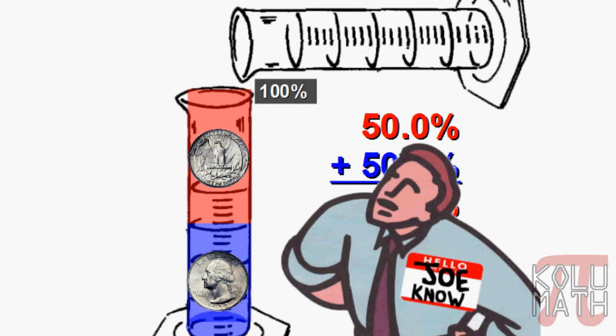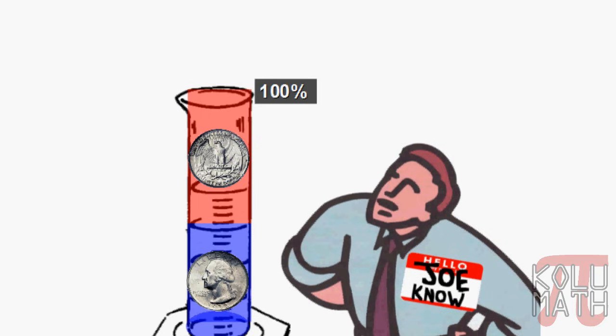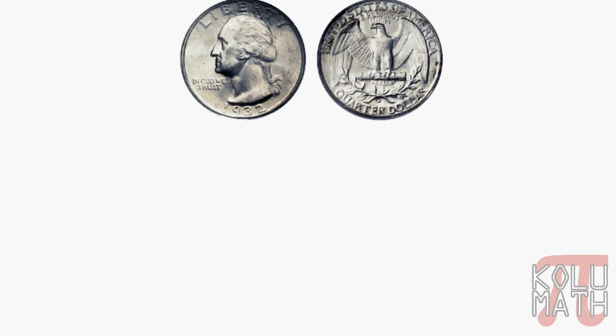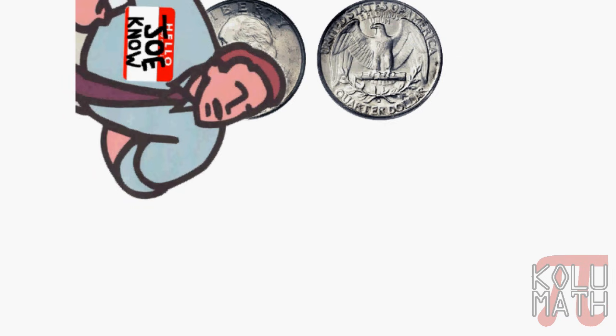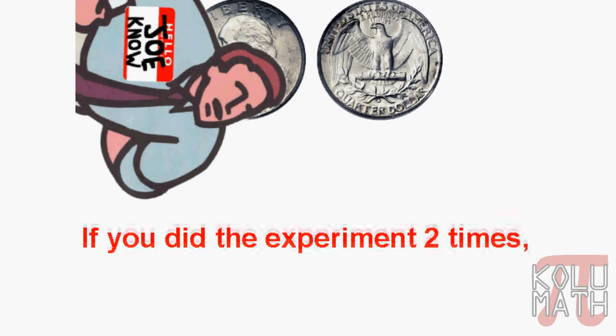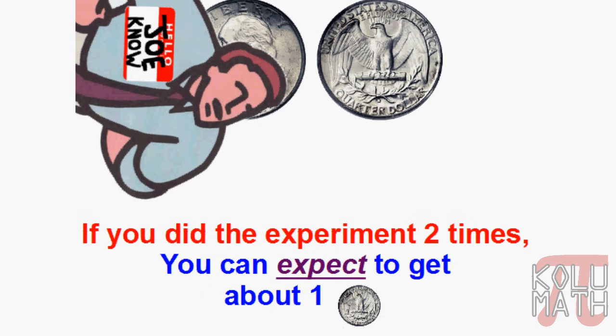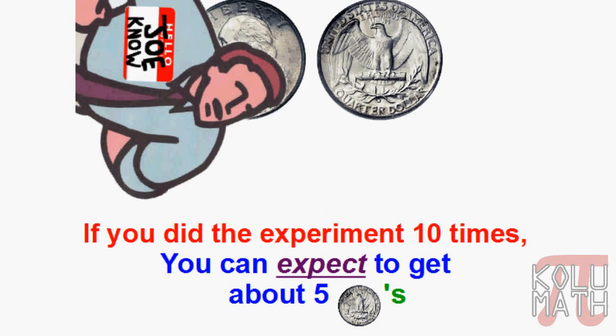Joe asks: are we talking about a probability of one half? Yes — good conversion. And can we apply the same logic we used before? If we did the experiment two times, we can expect to get about one tails. If we did it four times, we can expect two tails. What about ten times — could we expect five? Sure, Joe — that's exactly how probability works.